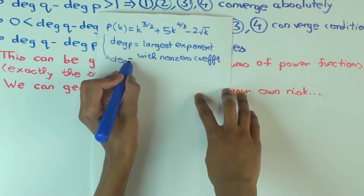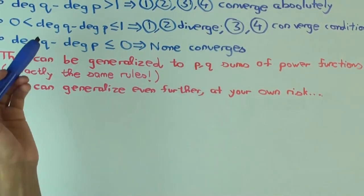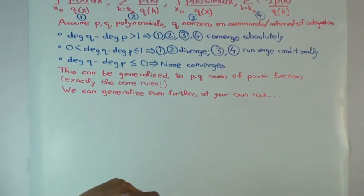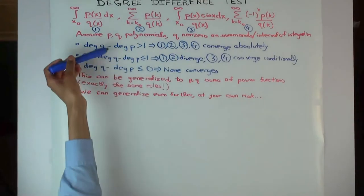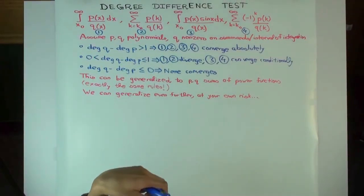Now, if you're looking at the situation where both p and q are sums of power functions and you have this notion of degree, then indeed, you can use exactly this rule to figure out whether you have the equivalence rule.